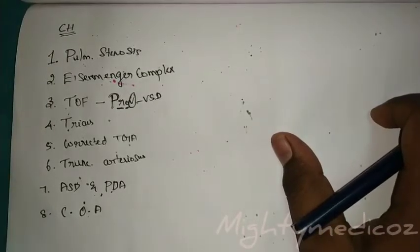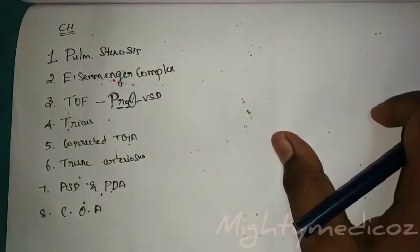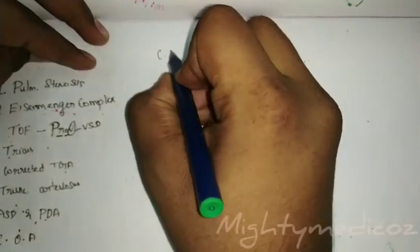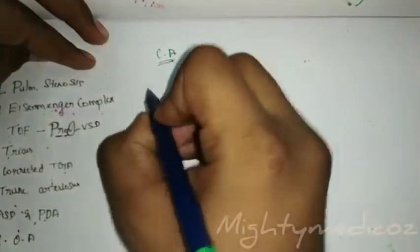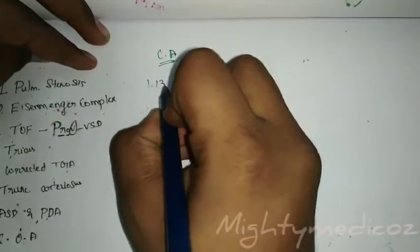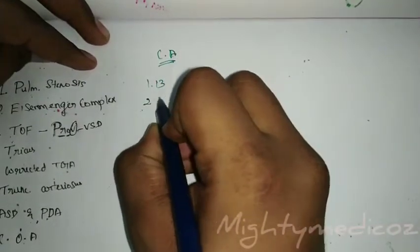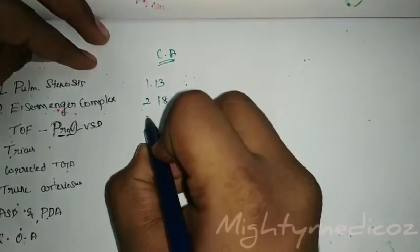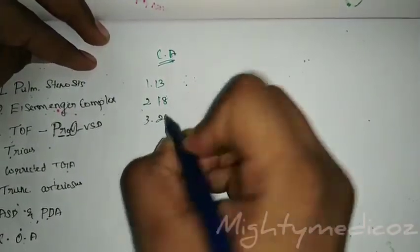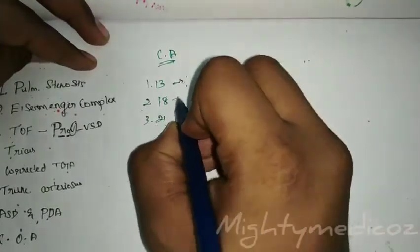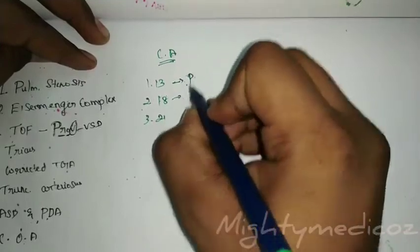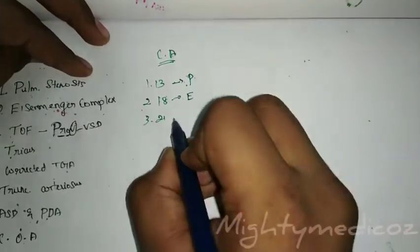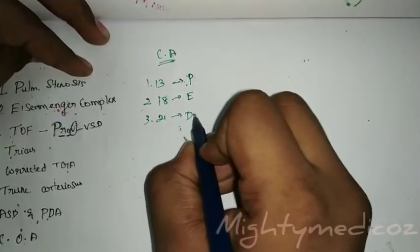Chromosomal abnormalities associated with VSD include trisomy 13 — which is Patau syndrome — trisomy 18 — which is Edwards syndrome — and trisomy 21 — which is Down syndrome.